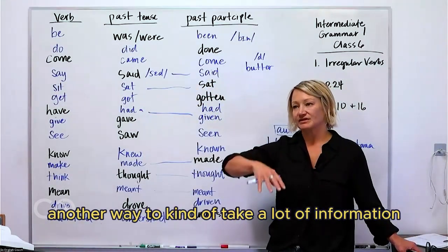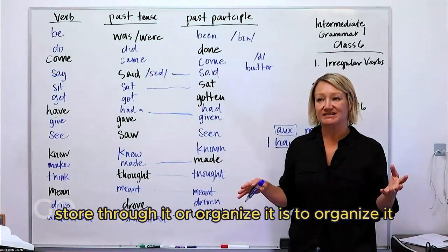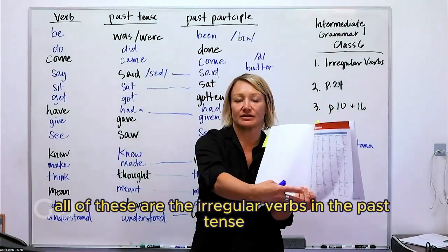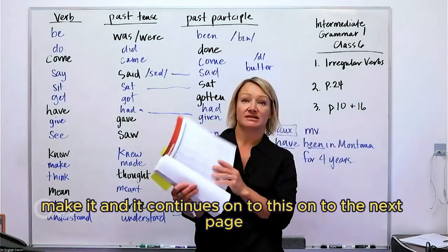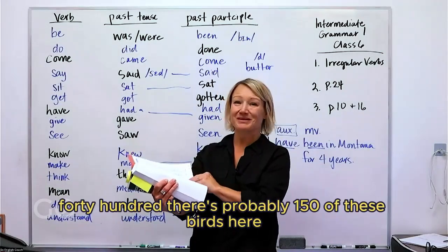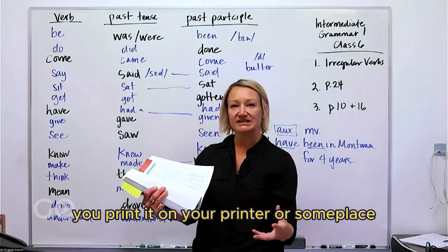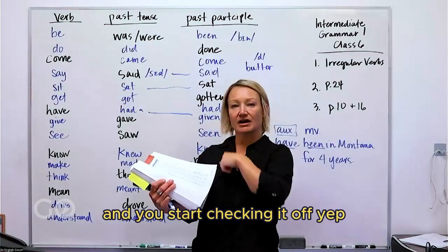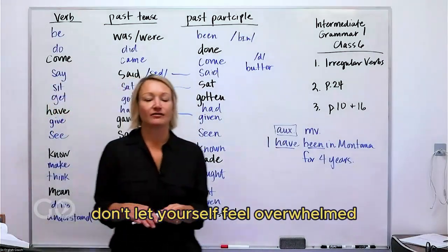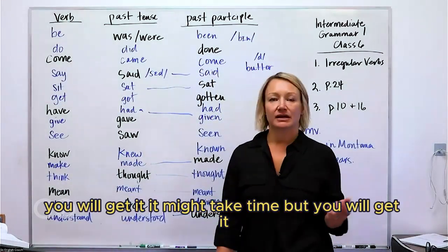One way to handle a lot of information is to organize it. You might go through a long list — there are probably about 150 irregular verbs with their past tense and participle forms, continuing onto the next page. Maybe print the list and start checking off the ones you know. Take a month to do it. Don't let yourself feel overwhelmed — there's no point in feeling overwhelmed. You will get it. It might take time, but you will get it.